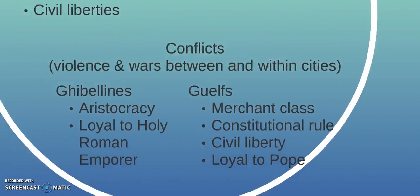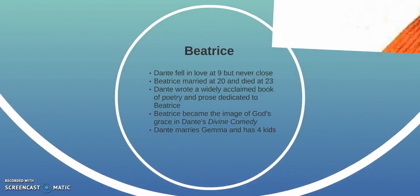An interesting thing about Dante — remember, he's a poet. When he was nine, he fell in love with a girl named Beatrice who was a year younger than him. Although they were never close during their lives, he continued to basically worship her from afar. When she was around 20, she married and then died a couple of years later. Dante wrote a widely acclaimed book of poetry and prose dedicated to her at this time. For him, she became an image of God's grace in his work called The Divine Comedy — which you probably know from its first volume, the Inferno.